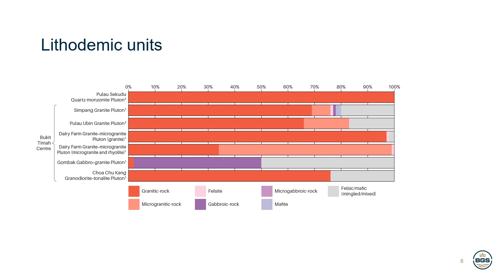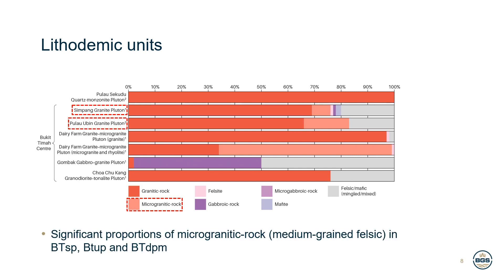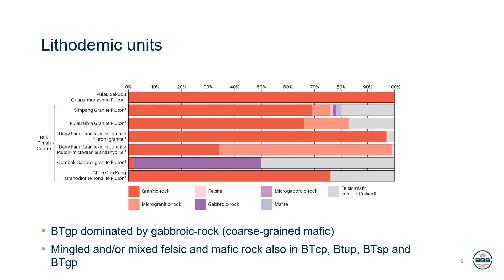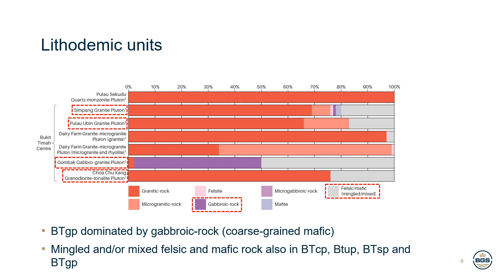Even in the lithodemic units there is significant heterogeneity. For the most part they are dominated by granitic rocks — coarse-grained felsic igneous rocks — but there is also a significant proportion of finer-grained microgranitic rocks, present in significant proportions in the Simpang and Anubian Plutons and so abundant in the Dairy Farm Pluton that a separate facies dominated by these rocks is identified on the BCA geological map. Significant proportions of mafic igneous rocks also occur, principally as coarse-grained gabbroic rock, mainly in the Gombak Pluton but also mingled with felsic rock in the Choa Chu Kang, Simpang, and Pulau Ubin Plutons.